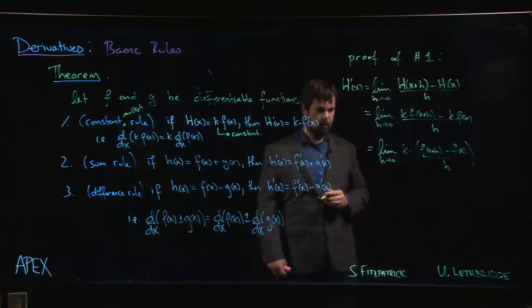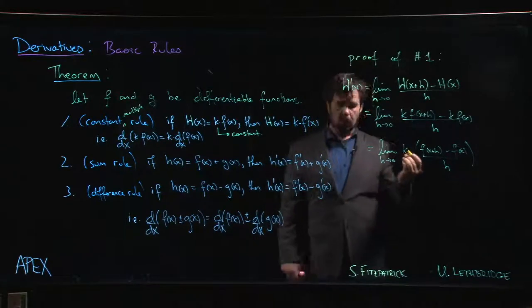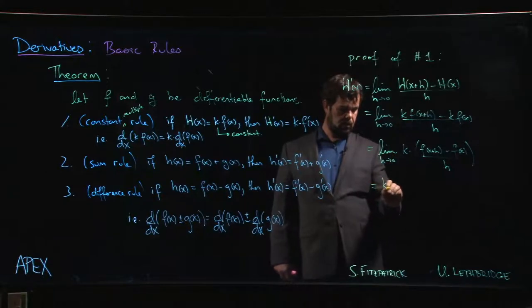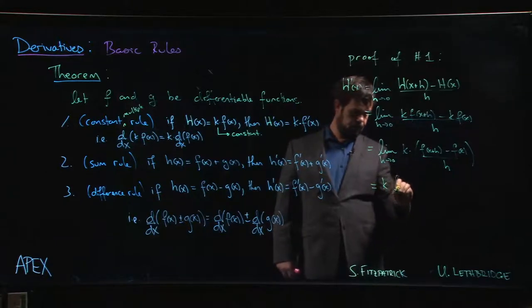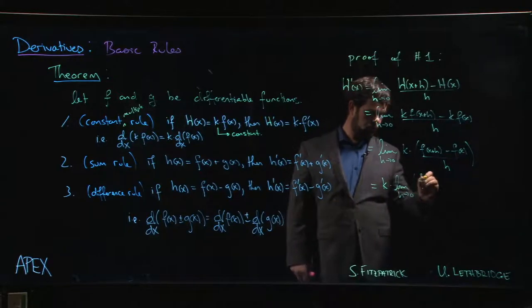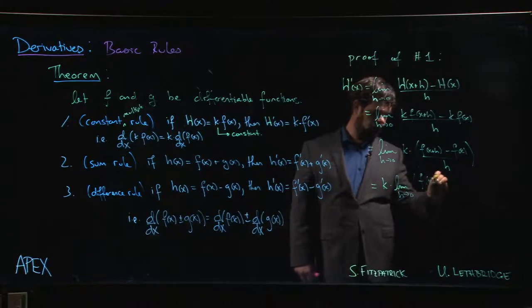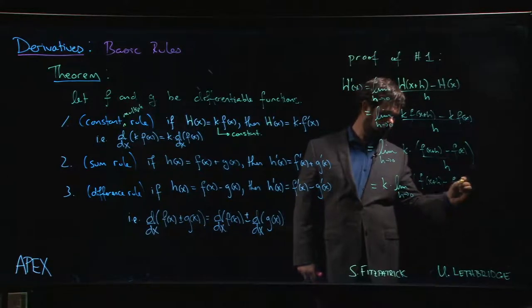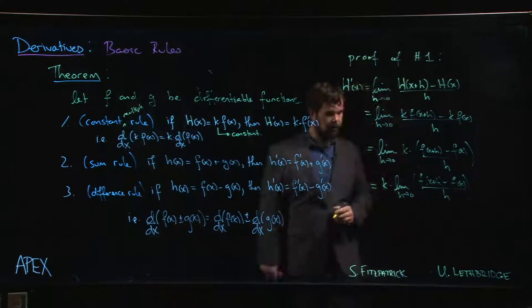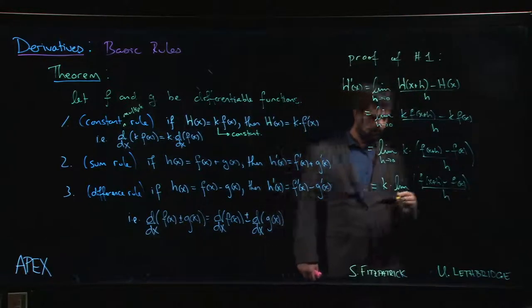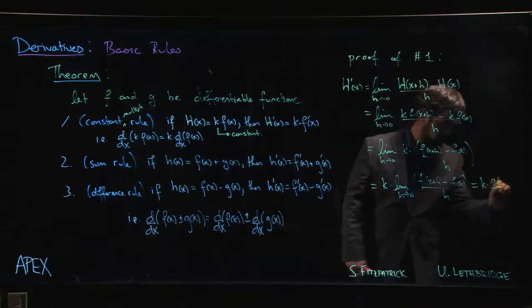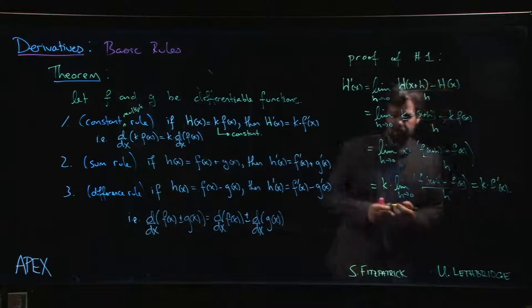This leaves us with that expression, and we know from our limit properties that if you have a constant multiple inside the limit, you can bring it outside. Once you do, we can easily recognize that what's left over is simply the derivative of f. So we get k times f prime of x, as expected.